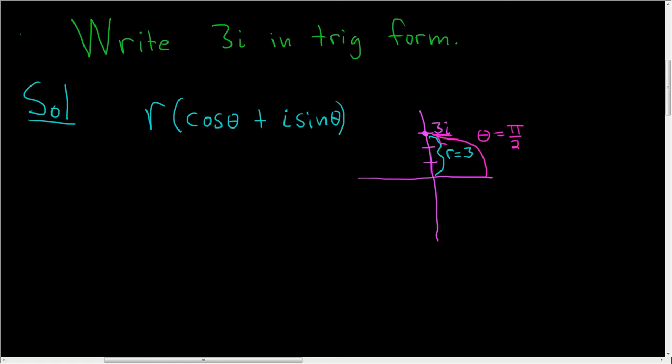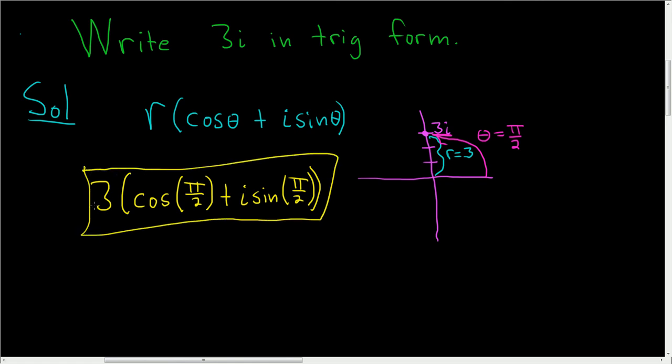So now we're ready to write the final answer down. So the final answer will be 3, that's our r, parentheses cosine of pi over 2 plus i sine of pi over 2. And that is the final answer. I hope this helps.